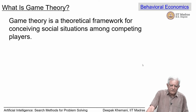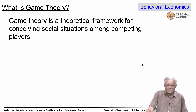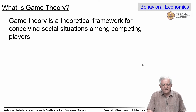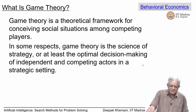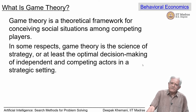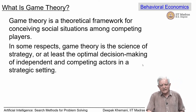Game theory is a theoretical framework for conceiving social situations amongst competing players. Typical games have adversaries, though game theory is even applied to situations where there may be cooperation. We will see that there are different kinds of games that one can model in social situations. In some respects, game theory is a science of strategy, or at least the optimal decision-making of independent and competing actors in a strategic setting. Whenever we study game theory, we assume that the players involved, or the agents involved, are perfectly rational.